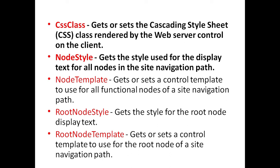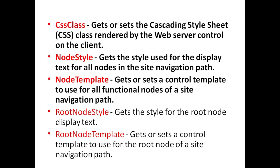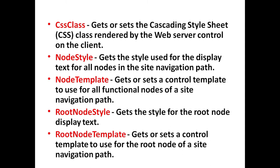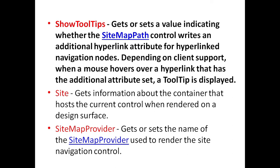NodeStyle property is used to get the style used for the display text for all nodes in the site navigation path. NodeTemplate is used to get or set a control template to use for all functional nodes of a site navigation path. ShowTooltip is used to get or set a value indicating whether the SiteMapPath control writes an additional hyperlink attribute for the hyperlinked navigation nodes. Depending on client support, when a mouse hovers over a hyperlink that has the additional attribute set, a tooltip is displayed.